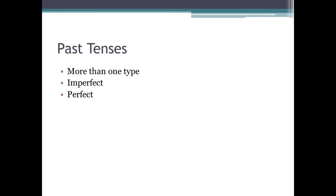Past tenses. Latin has more than one past tense to describe events that have happened in the past. Here are two of them: the imperfect and the perfect. We'll look more closely at them over the next few slides.